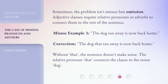Sometimes the problem isn't misuse but omission. Adjective clauses require relative pronouns or adverbs to connect them to the rest of the sentence. Misuse Example 3: 'The dog ran away is now back home.' Correction: 'The dog that ran away is now back home.' Without 'that,' the sentence doesn't make sense. The relative pronoun 'that' connects the clause to the noun — dog.